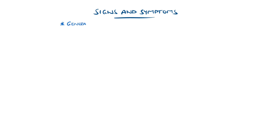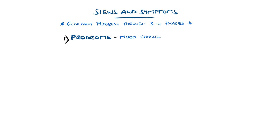Migraine can be divided into three or four distinct phases. First, preceding the headache, there is often a prodrome in which the person becomes aware that a migraine is beginning, and this can include mood changes, cravings for certain foods, yawning, and even cervicalgia, meaning neck pain. This typically lasts hours to days.